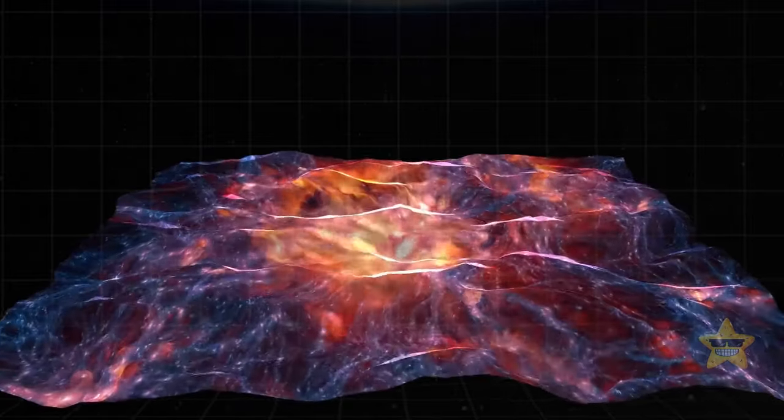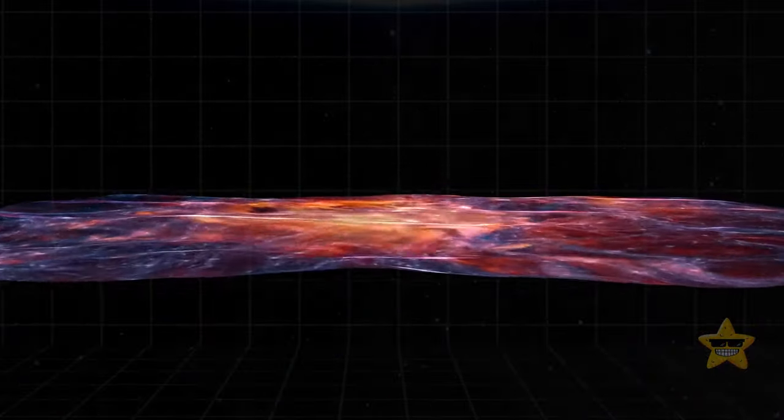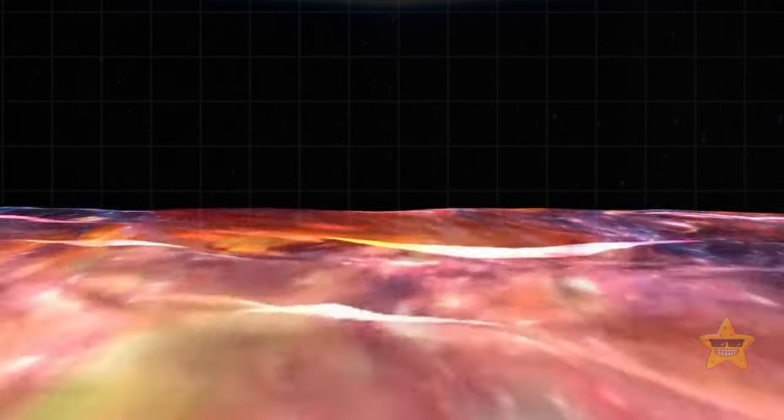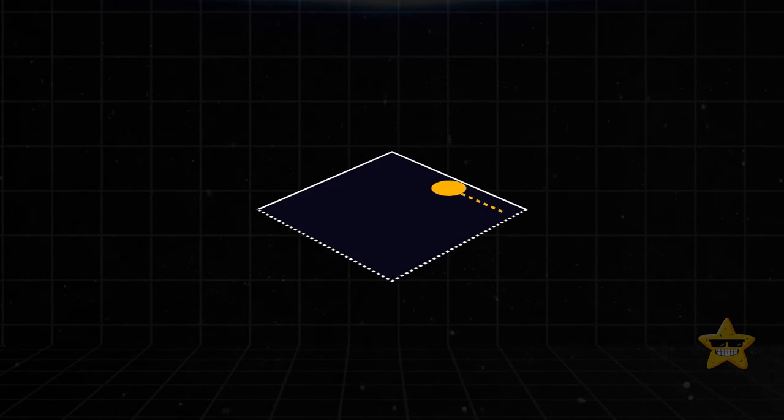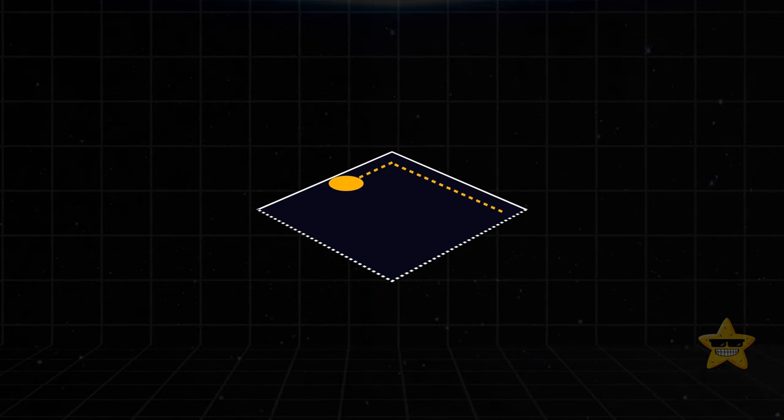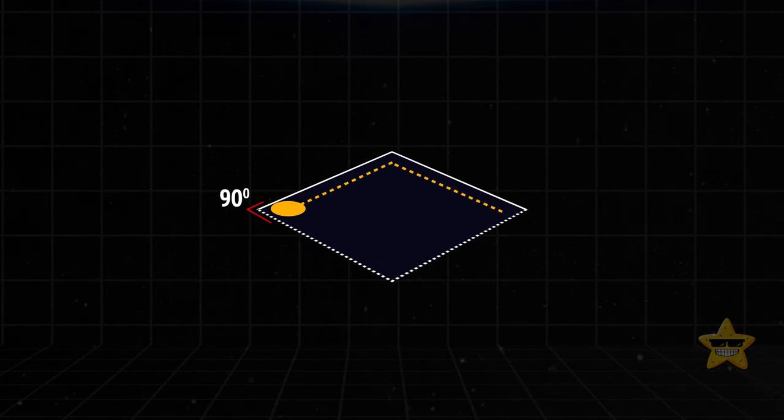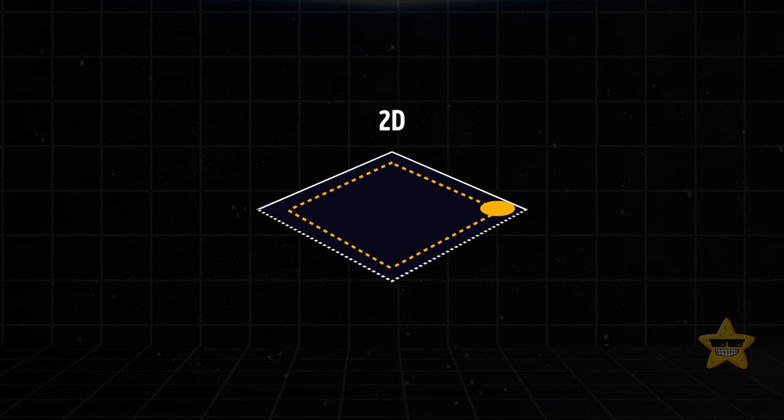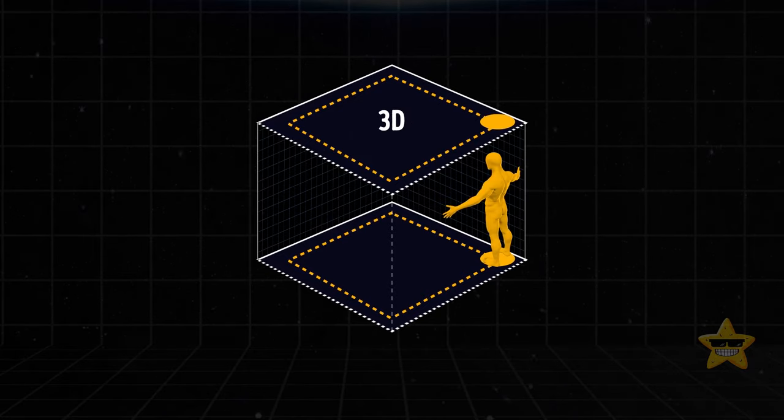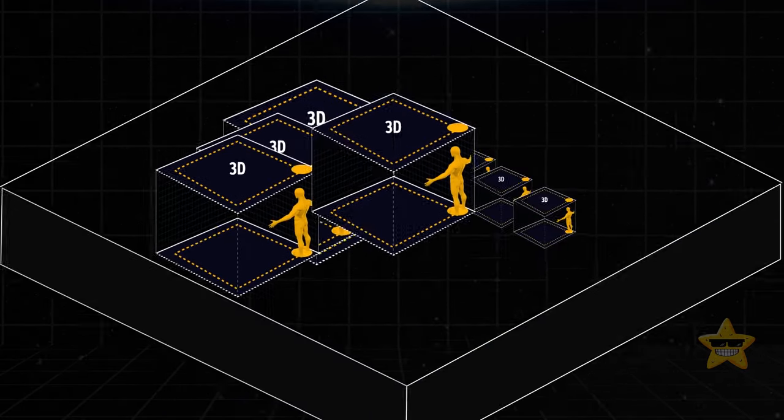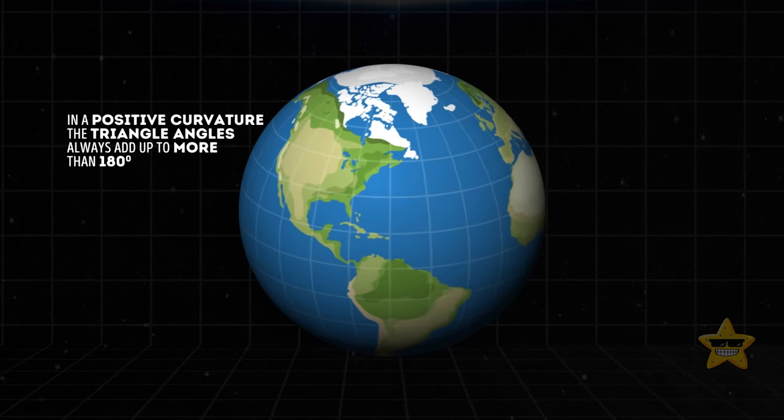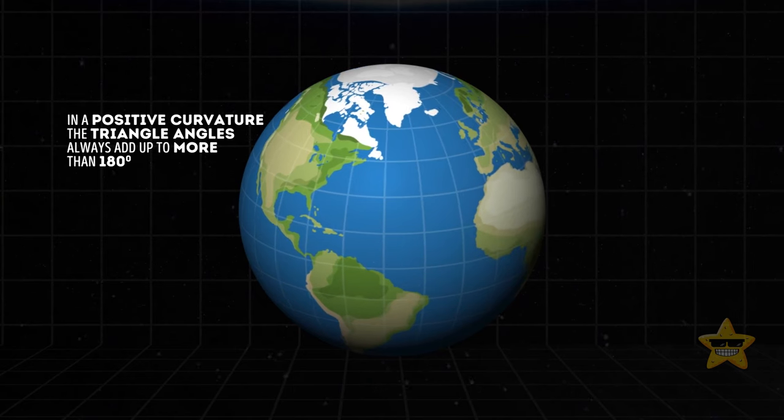But what does it mean if the universe is flat? It doesn't mean we're living in an infinite sheet of paper. To understand it, consider these analogies. Imagine you're in a square room. Walk 10 steps to the next corner, make a 90-degree turn, walk another 10 steps, and repeat this process twice more. You end up back at your starting point, completing a square. Add another dimension to this geometry since we're not 2D creatures, and whoopee, you have a flat universe. This analogy wouldn't hold up in a curved space.